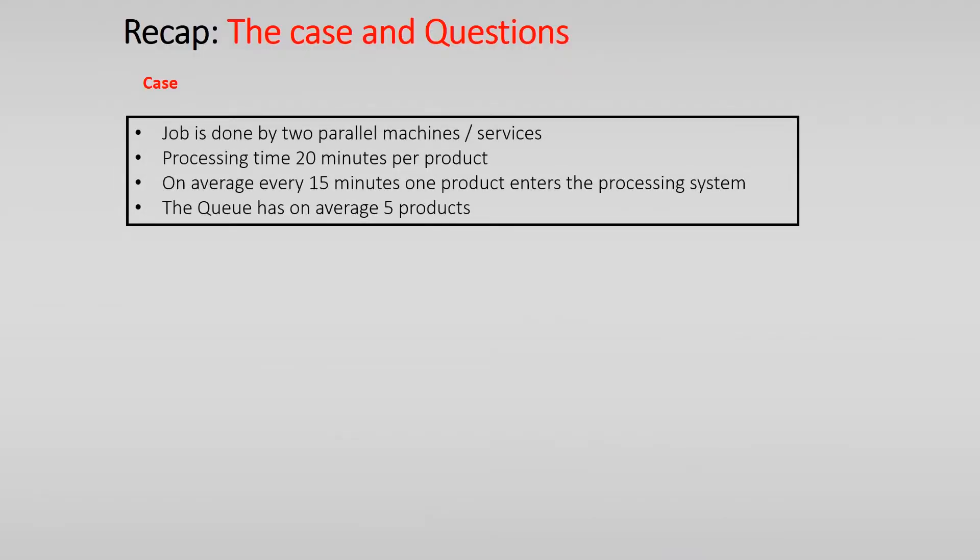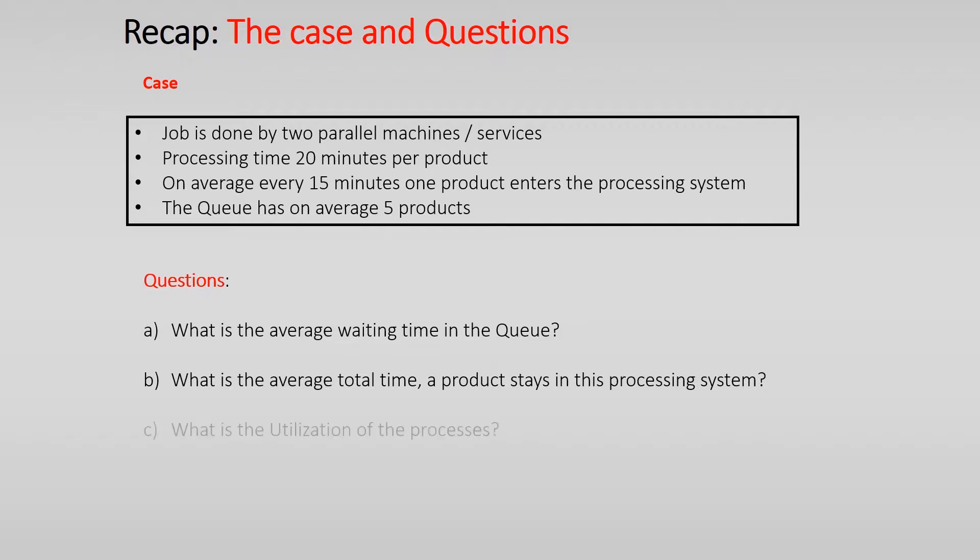A small recapitulation of the case. We have two machines that can do a certain job. The processing time for every machine is 20 minutes and on average every 15 minutes one product enters the system. We measured the queue and on average 5 items were in queue. We asked the average waiting time in the queue, the total time for a product in the processing system, and the utilization of the processes.